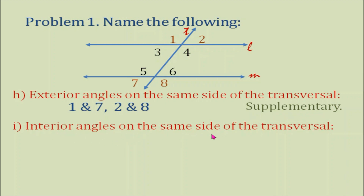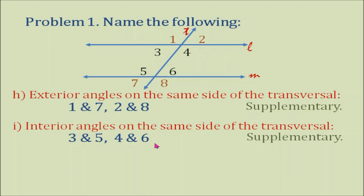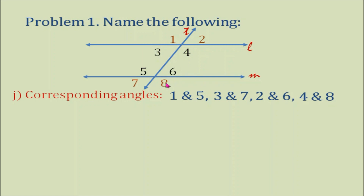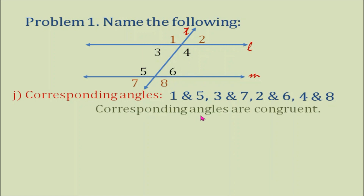How about interior angles on the same side of the transversal? How about corresponding angles? The corresponding angle pairs we have here are angles 1 and 5, angles 3 and 7, angles 2 and 6, and angles 4 and 8. Let's remember that corresponding angles are congruent.